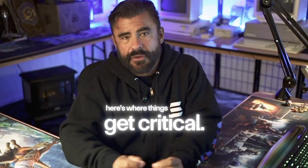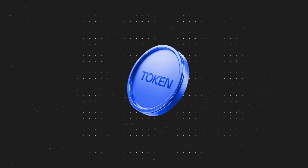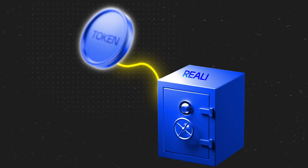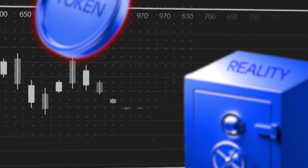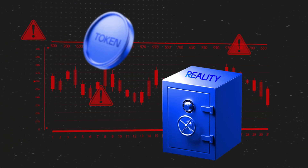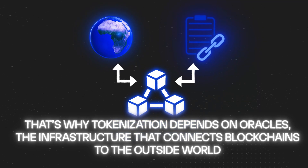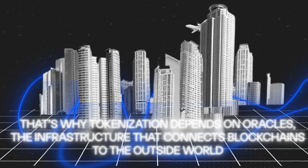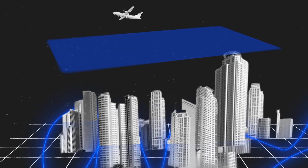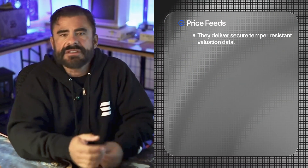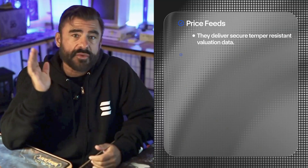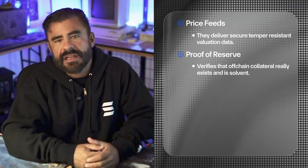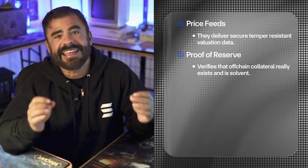Here's where things get critical: a token is only as good as its connection to reality. If collateral disappears or pricing data is wrong, the system breaks. That's why tokenization depends on oracles, the infrastructure that connects blockchains to the outside world. Chainlink provides the trust layer here with four key services. Price feeds deliver secure, tamper-resistant valuation data. Proof of reserve verifies that off-chain collateral really exists and is solvent.